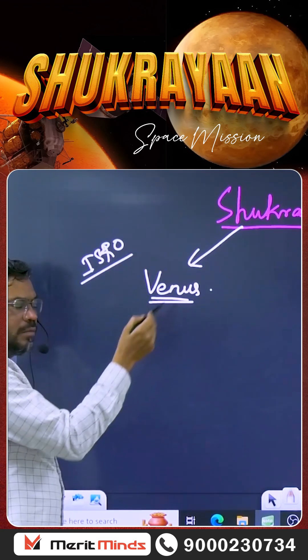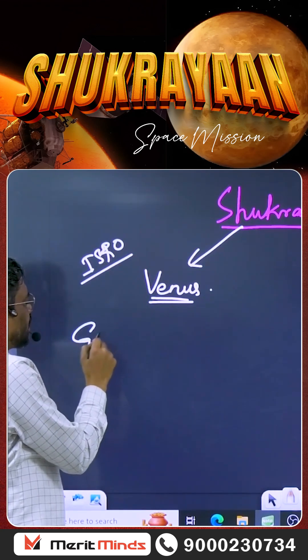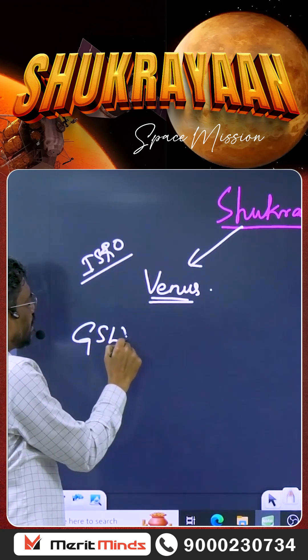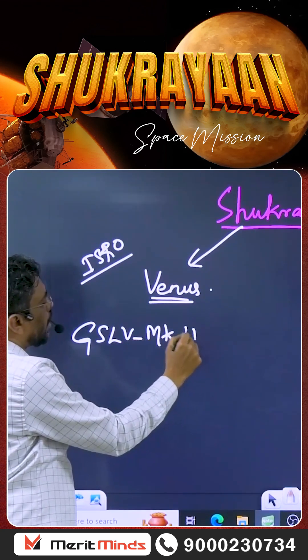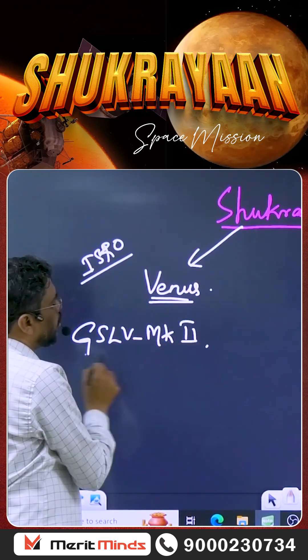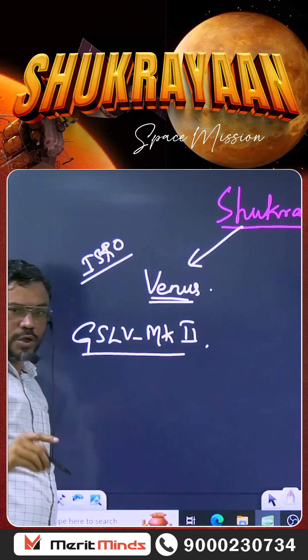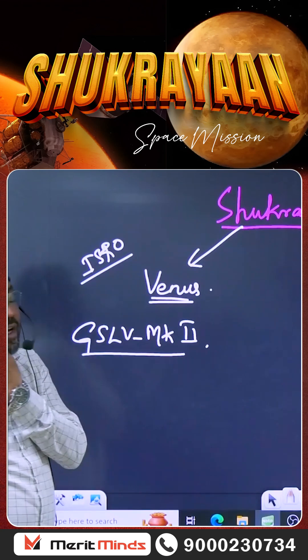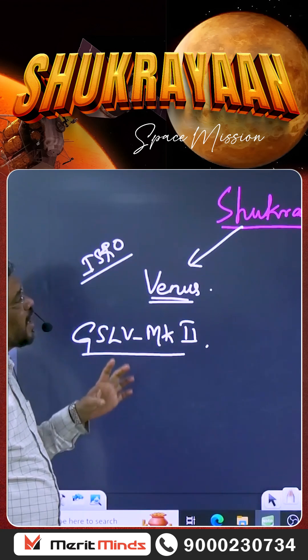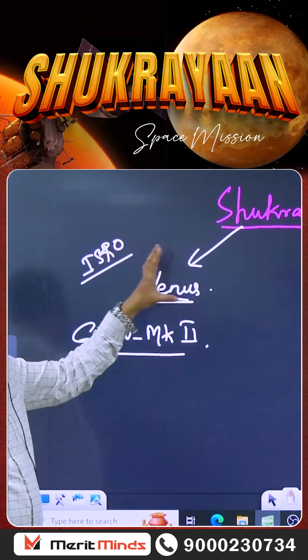For this mission, the GSLV Mk2 rocket will be used — GSLV Mk2 rocket with an orbiter mission.